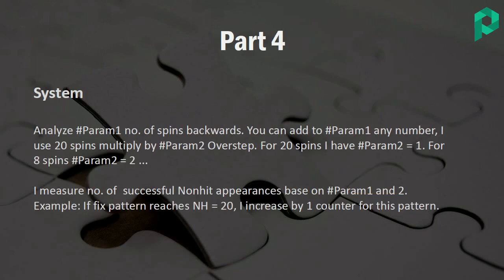I'm going to introduce this in a small video series. You can repeat the video, watch it, work with your own Excel file, or develop it in your own app — that's all fine. I analyzed the number of spins backwards, cutting the last sequence into two parts, using parameter one and parameter two. In general, I work with two sets of 20 spins, so my first area of analysis is the first 20 spins.